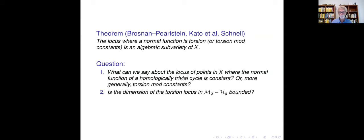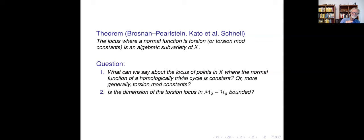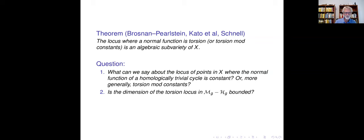To clarify: when I said the locus where a normal function is torsion is an algebraic subvariety, I should say it's a countable union of algebraic subvarieties. Right—because another question would be: can you have loci where the normal function of the Tseresa cycle has arbitrarily large order? So: is the order of the torsion loci of the Tseresa normal function bounded? I have no idea what the answer is. I'll add that question when I revise the notes.